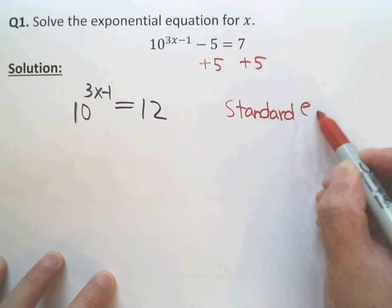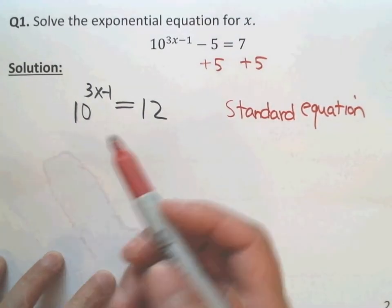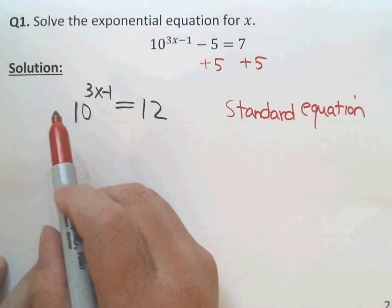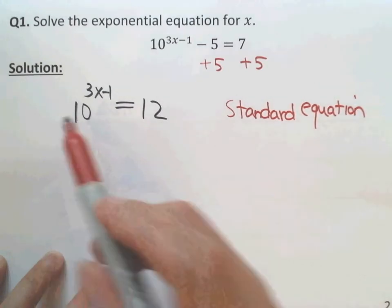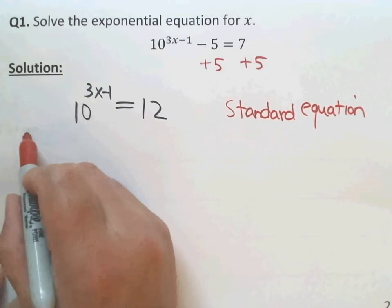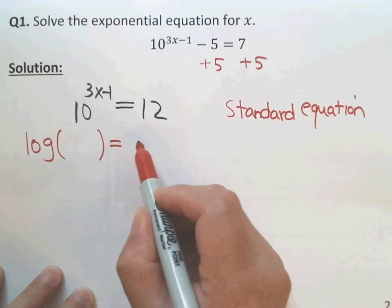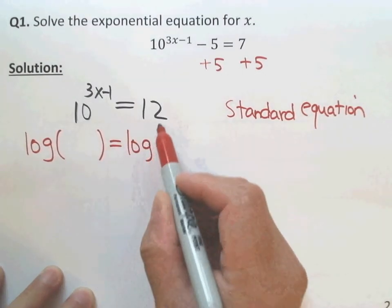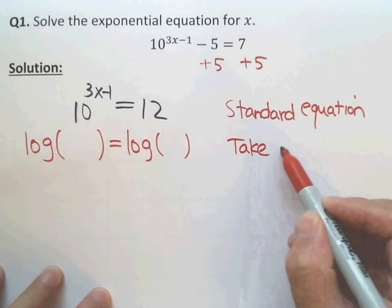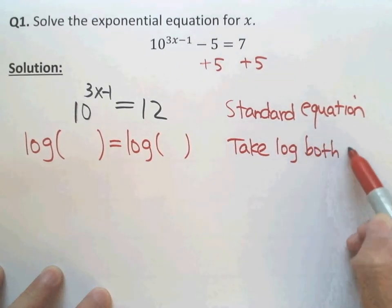This standard equation looks much easier than the original equation. So the first step is to get a standard equation. And then we take a log. Which log? Well, the easiest one is to take the common logarithm, because the base here is 10. Take log of both sides — take log of the left and take log of the right.